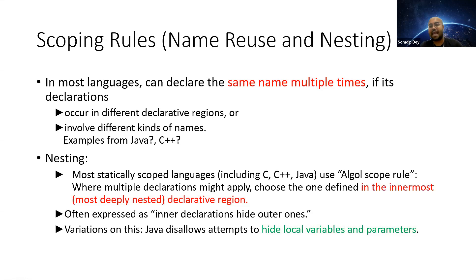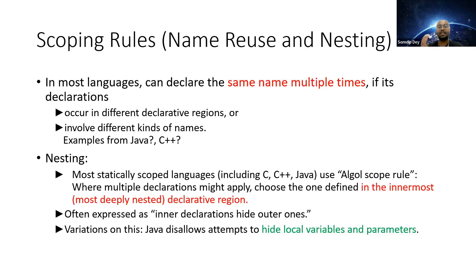In most languages, you can declare the same name multiple times if the declarations occur in different declarative regions, or if it involves different kinds of names. For example, in Java and C++ you can use the same name for variables if they are in different declarative regions. In most statically scoped languages such as C, C++, and Java, the Algol-based scope rule is used where inner declarations hide outer ones.